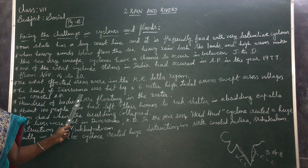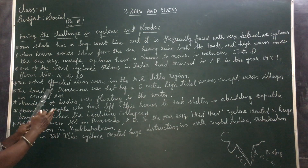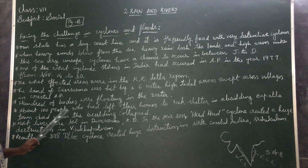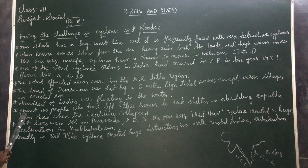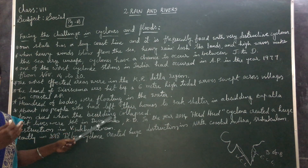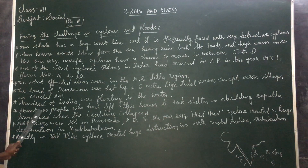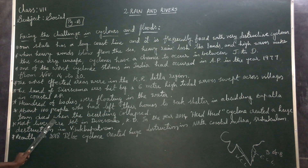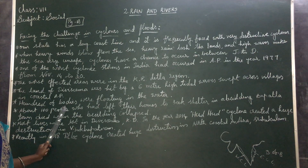The delta is triangular in shape. Hundreds of bodies were floating on the water as entire villages were swept away. About a hundred people who had left their homes to seek shelter in a building in Bapatla town died when the building collapsed.